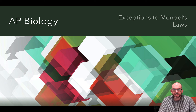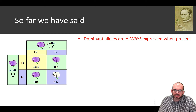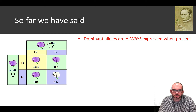Hi everyone, this lesson looks at exceptions to Mendel's laws. So far when looking at Mendelian genetics, we've said that a dominant allele is an allele that is always expressed when present.